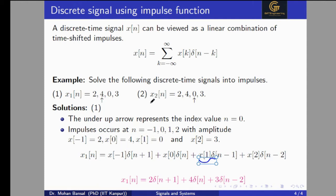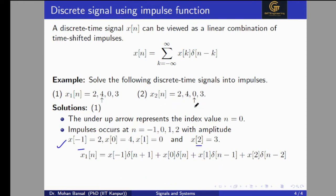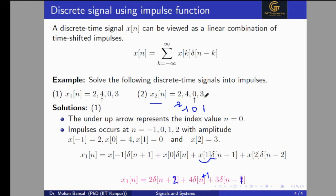In the same way we solve problem two: x2[n] is given as {2, 4, 0, 3} but now zero is at n equal to zero, three is at n equal to one, four is at n equal to minus one, and two is at n equal to minus two. Always remember the up-arrow represents n equal to zero. Solving, the δ(n) term does not appear since zero is defined for n equal to zero; four is at n equal to minus one giving 4δ(n+1); and two is at n equal to minus two giving 2δ(n+2). The full result is: 2δ(n+2) + 4δ(n+1) + 3δ(n-1).